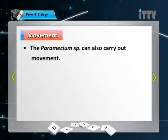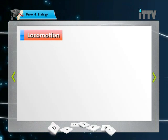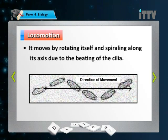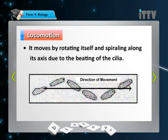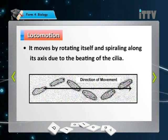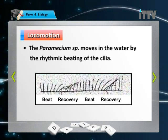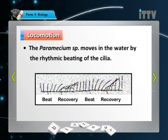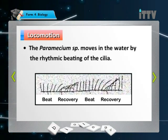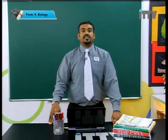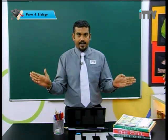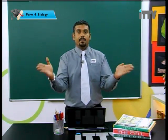Paramecium can also carry out movement. Let's look at locomotion in Paramecium. It moves in the water by the rhythmic beating of the cilia — the cilia beat and recover, beat and recover, acting like an oar on a boat. Just as a boat's oars push the water away to allow movement, the beating cilia allow Paramecium to move through the water.